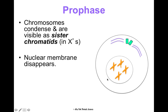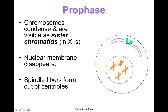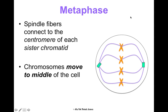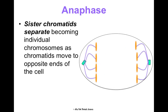The nuclear membrane disappears — shown here dissolving with a dotted line — and spindle fibers start forming out of the centrioles. These spindle fibers are what will move the chromosomes around. In metaphase, the spindle fibers connect to the centromeres of each sister chromatid and line them up in the middle of the cell, single file.